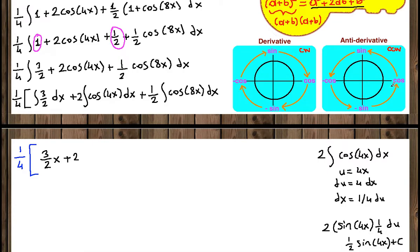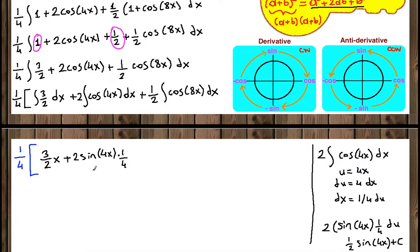You can do u-substitution step by step or by heart. The anti-derivatives of trig functions follow a cycle: going counterclockwise gives anti-derivatives, clockwise gives derivatives. Cosine in the positive x direction, negative cosine in the negative x direction, positive sine in the positive y direction, negative sine in the negative y direction. So for the one half cosine of 8x term, the anti-derivative of cosine is sine, the angle 8x does not change, and the correction factor from inside the function gives one eighth.